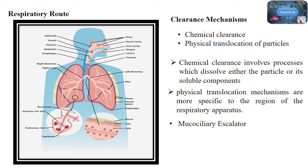It eliminates particles from the tracheobronchial region in just 24 hours. Another clearance mechanism is phagocytosis by alveolar macrophages. This is one of the effective clearance mechanisms that happens in the alveolar region.